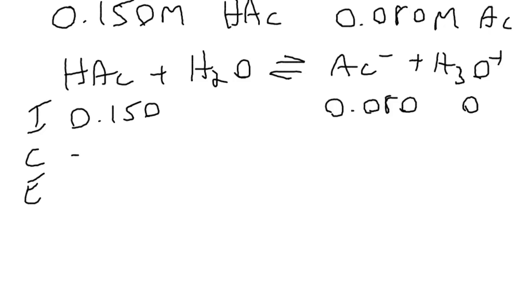Now as it changes, it will go in the forward direction, because otherwise we get a negative concentration for H3O+. So we'll lose some acetic acid. We're going to gain the same number of moles of acetate, moles per liter, since it's all in the same volume, and we'll gain the same number of moles of H3O+. So equilibrium will be 0.15 minus x for acetic acid, 0.08 plus x for acetate, and just x for H3O+.